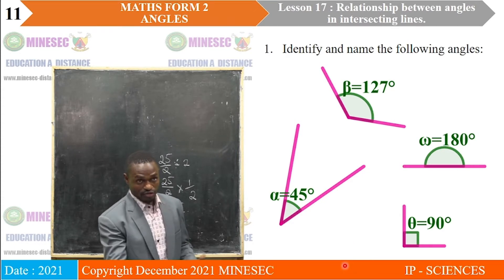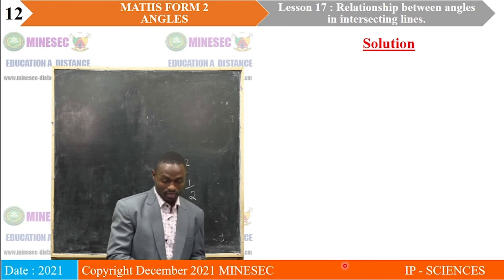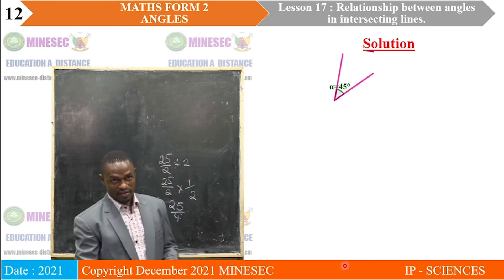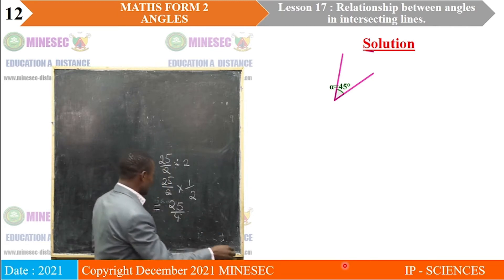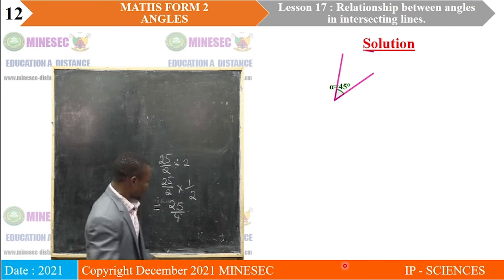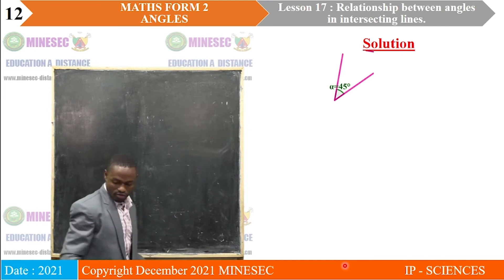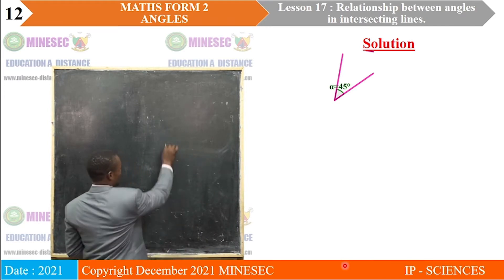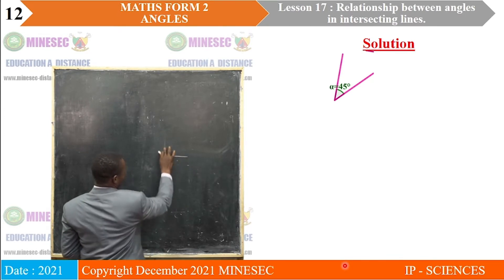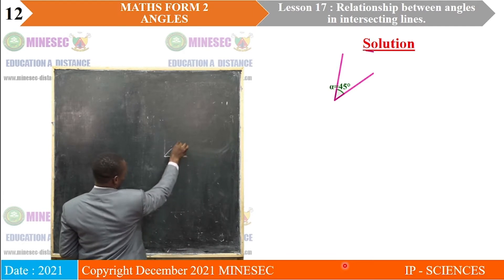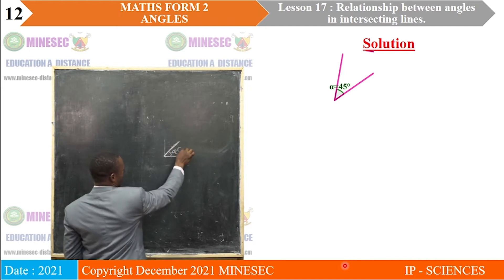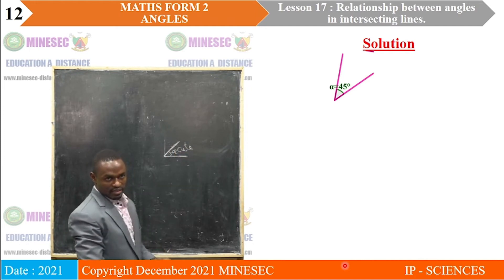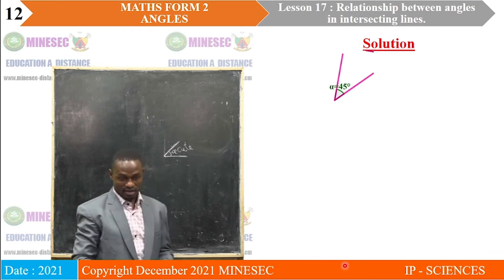As a solution to this activity, we get the first angle. As you already know from the basic notion of angles, when an angle is not open enough to reach a right angle, we call it an acute angle. So that angle indicating 45 degrees is an acute angle.